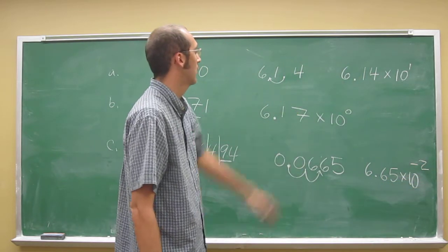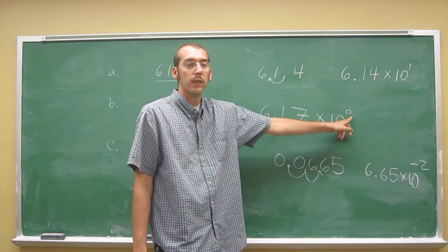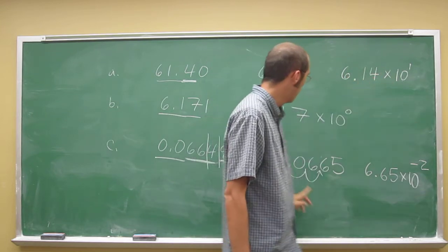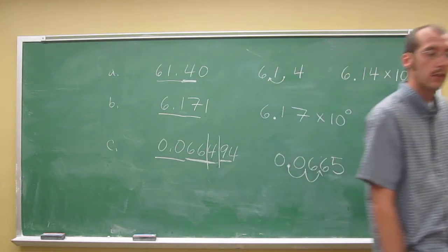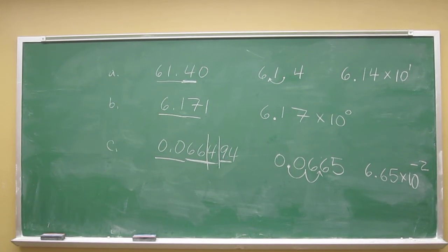So that's how you do scientific notation for all of them. This one we didn't move, so it's 0. This one we moved once to the left, so it's positive 1. This one we moved two times to the right, so it's negative 2. Everybody cool with that one? Pretty straightforward. Good job, guys.